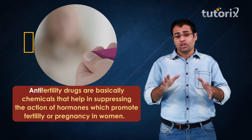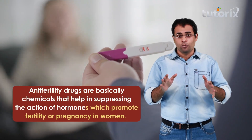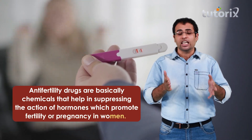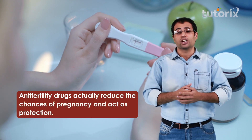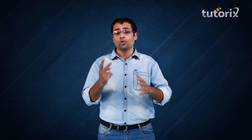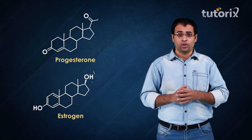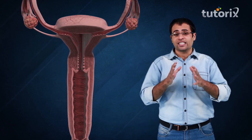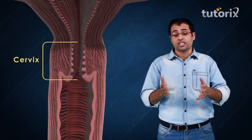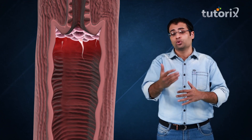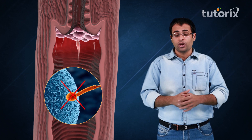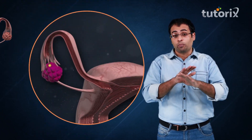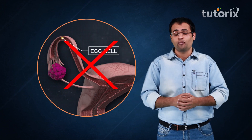Anti-fertility drugs are basically chemicals which suppress the action of hormones that promote fertility or pregnancy in women, reducing the chances of pregnancy and acting as a protective measure. There are two hormones which regulate pregnancy in females: progesterone and estrogen. Progesterone causes the mucus present in the cervix to thicken up, preventing the entry of the sperm into the uterus and hence preventing fertilization of the egg. Progesterone also suppresses ovulation in females, decreasing the chances of pregnancy.